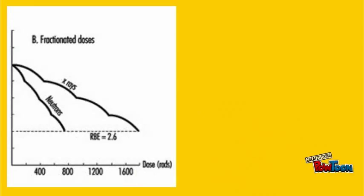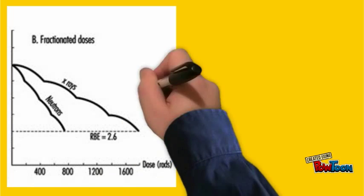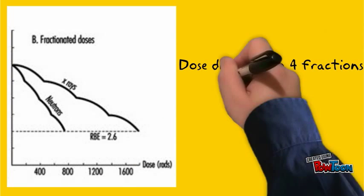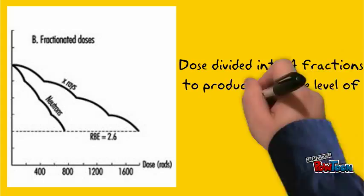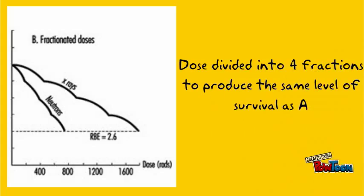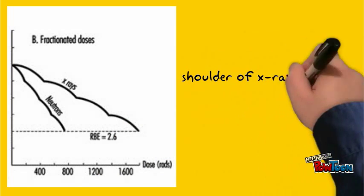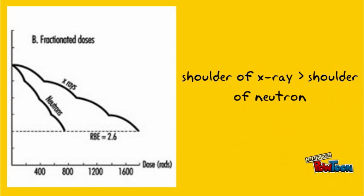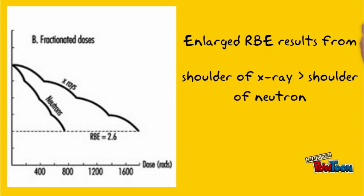Moving on to graph B. Graph B shows the effect of giving doses of X-rays or fast neutrons in four equal fractions to produce the same level of survival as graph A. The fact that the larger shoulder for X-rays than neutrons results in an enlarged RBE for fractionated treatments.